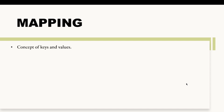In this video we are going to talk about mapping. The mapping data type in Solidity deals with keys and values. Whenever you have to define a mapping in Solidity, you define it as mapping from key to value, where the key is the data type of your key and value is the data type of your value.